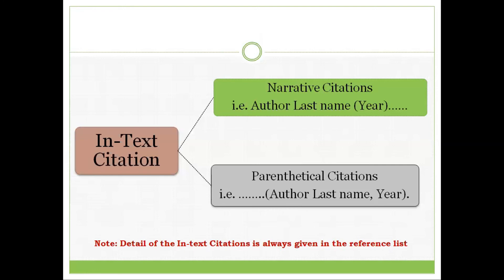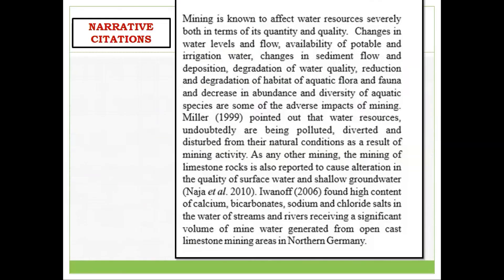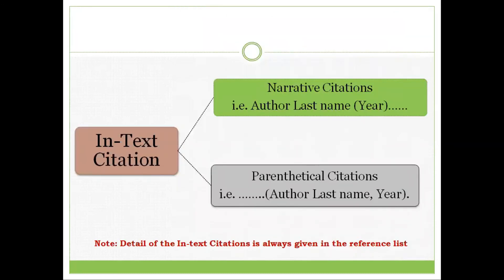In-text citations are of two types. Number one is called narrative citation. What is a narrative citation? When the author's name is incorporated as part of the sentence or the narrative, and immediately followed by the year within parenthesis — for example, have a look at this: immediately after the name of the author is the year of publication within parenthesis, and the name of the author is incorporated as part of the sentence.